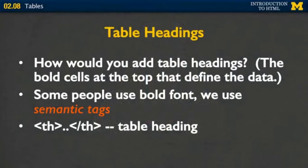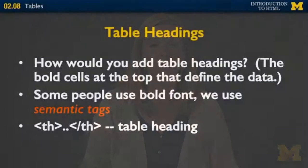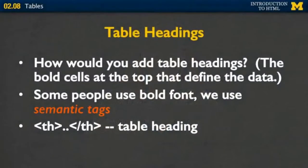In some cases you might want to add table headings to your code. Table headings are the idea that at the top of each column, or at the start of each row, you have bold text indicating this isn't data — this is the name of the data we're looking at. What some people do is use regular TD elements and make them bold, but we really want to avoid that. Instead of using a TD with a bold font, we want to use the semantic tag TH, which stands for table heading.